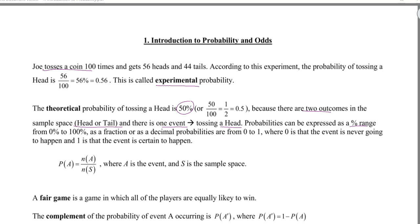Probabilities can be expressed as a percent, and if they are, they go from 0 to 100 — so in probabilities you cannot give 110%. They can be expressed as a fraction or as a decimal, and if you're doing it as a decimal, probabilities go from 0 to 1. Where 0 means the event is never going to happen and 1 means the event is certain to happen. So the definition of probability: the probability of event A is the number of times event A occurs out of the total number of outcomes in the sample space.